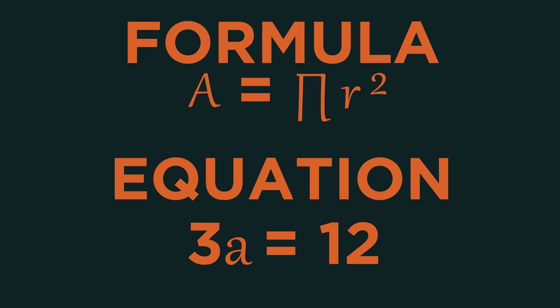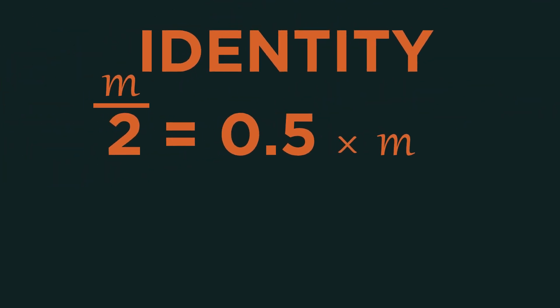An identity is another special type of equation. They are equations that are true no matter what values are chosen. The two sides of an identity are interchangeable so we can replace one with the other at any time.